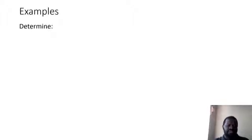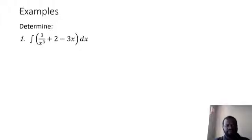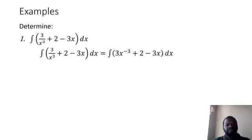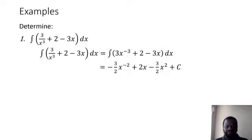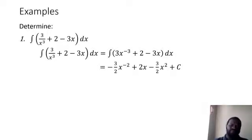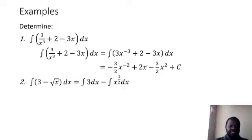Let's look at a few examples of integration. For question one, write the first term in exponential form ax^n. The constant 2 integrates to 2x. Minus 3x is minus 3x exponent 1 — you add one to the exponent to get negative two... wait, you add 1 to the exponent of x: 1 plus 1 is 2, then you divide 3 by 2, then you add the constant of integration.